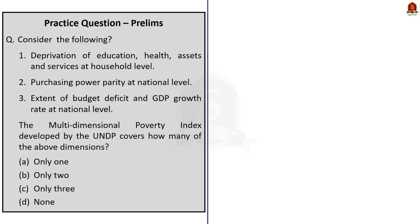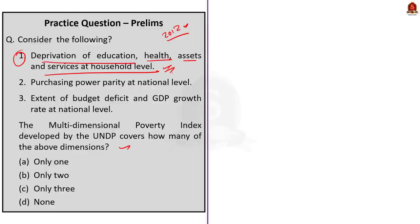The second question is a three-statement question about MPI, originally asked in the 2012 UPSC prelims but with updated options. Three dimensions are given; we need to find how many are covered by the MPI. Of the three, only the dimension of deprivation of education, health, assets, and services at the household level is covered under MPI. Purchasing power parity at the national level and the extent of budget deficit and GDP growth rate at the national level are not covered. So the correct answer is option A: only one.